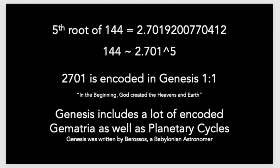If we look at the fifth root of 144, we get 2.7019, etc. And not to get creepy and weird, but 2.701 is encoded in Genesis 1:1. I'm not a huge fan of gematria because my name in gematria means something ridiculous.